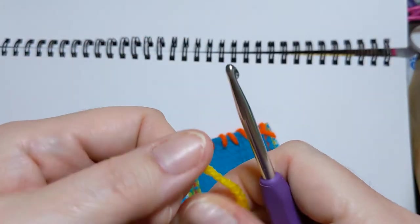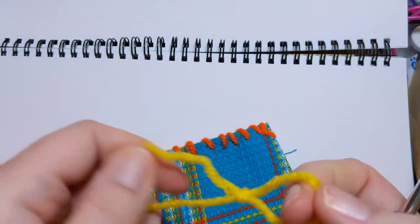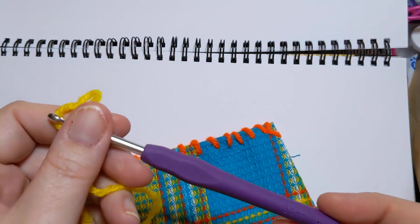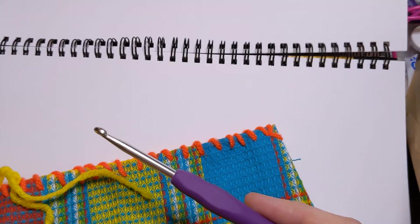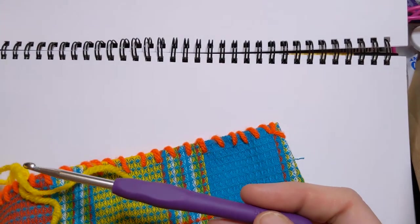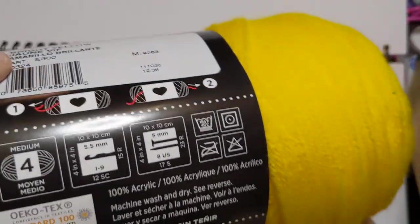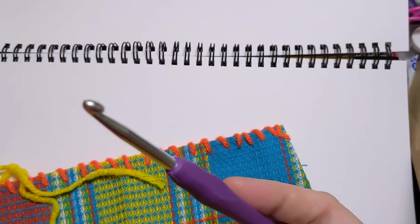Now, the first thing we do, just like we normally do, we attach our yarn to our crochet hook. And by the way, for this, I generally use the recommended hook for the yarn. In this case, this is Red Heart. It says to use a 5mm hook, and that is what I'm using here.